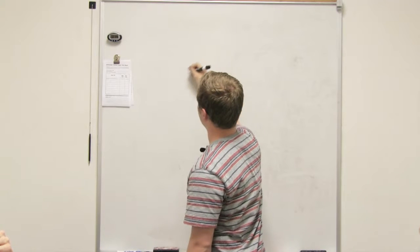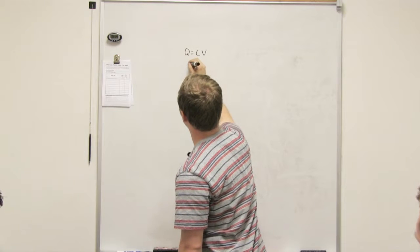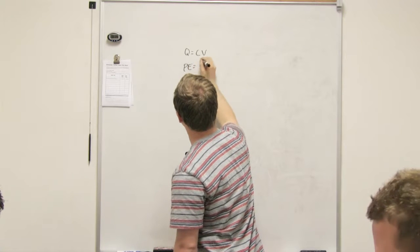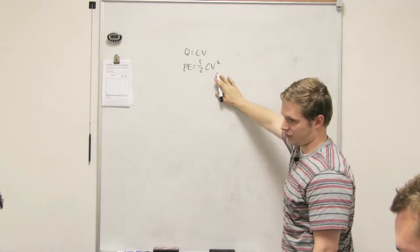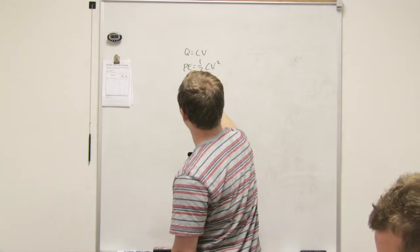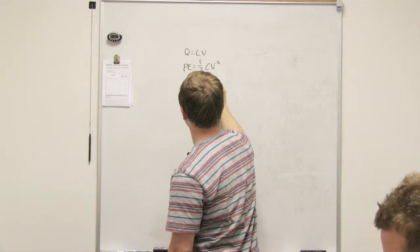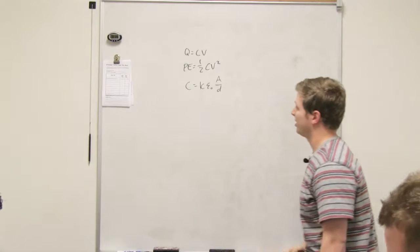So yeah, really the equations you know for capacitors are like the ones we kind of talked about. This one, the potential energy of a capacitor. So the capacitance times the volts squared, there's this one too, so the dielectric times area divided by the distance between it.